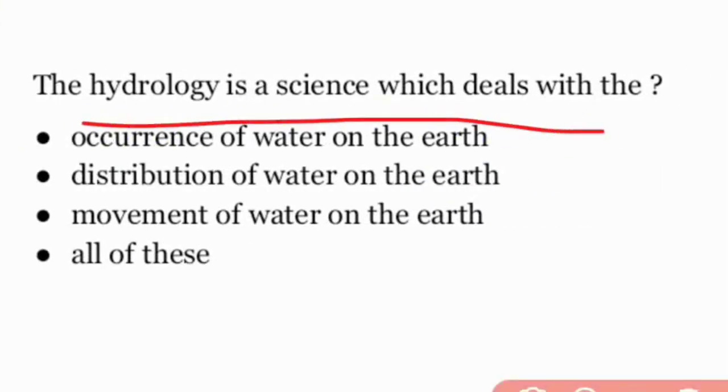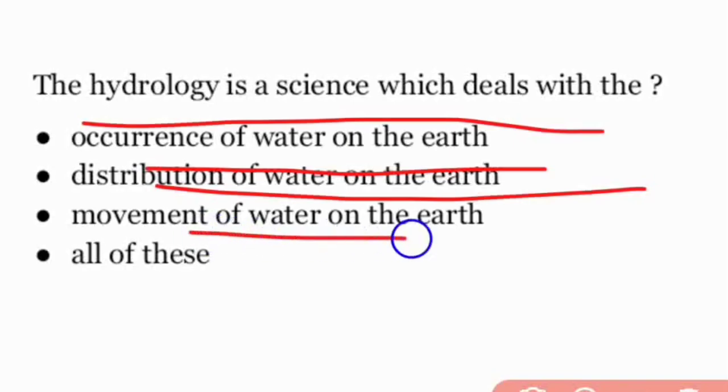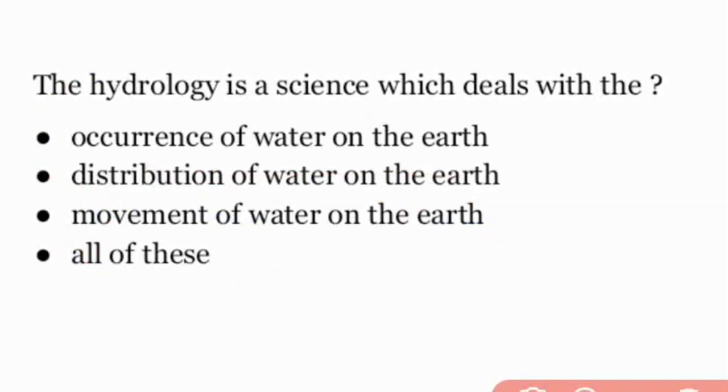Next, hydrology is a science which deals with what? Hydrology is a science that deals with occurrence of water on the earth's surface, distribution of water on the earth's surface, and movement of water on the earth's surface. The answer is all of the above.